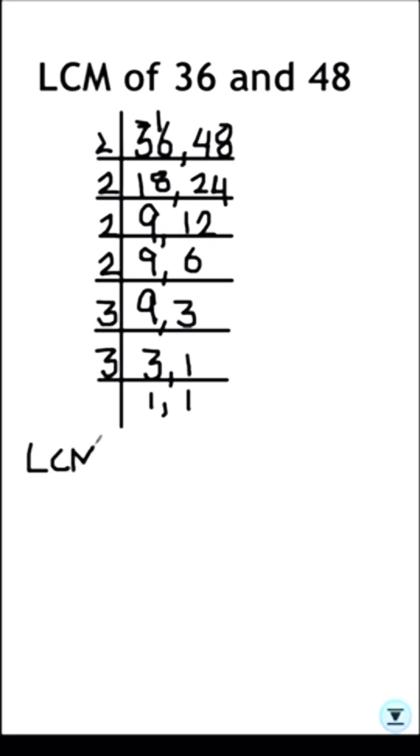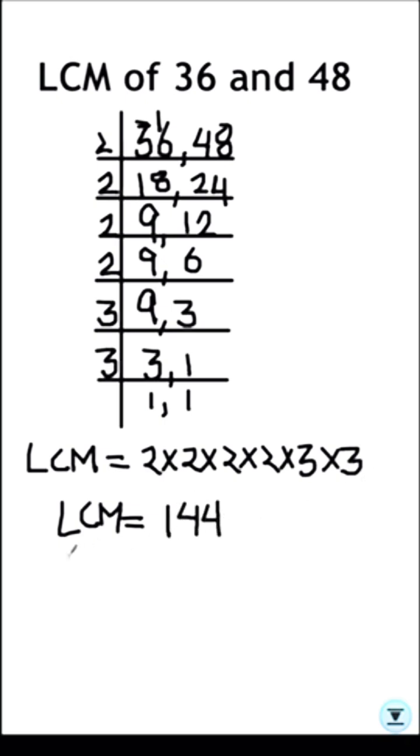2 times 2 is 4. 4 times 2 is 8. 8 times 2 is 16. 16 times 3 is 48 and 48 times 3 will give us 144. So the LCM of 36 and 48 is 144.